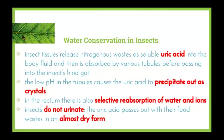Water conservation in insects works a little differently. Insect tissues release nitrogenous wastes as soluble uric acid into the body fluid, which is then absorbed by various tubules before passing into the insect's hindgut. The low pH in the tubules causes the uric acid to precipitate out as crystals, involving much less water than our nitrogenous waste system. In the rectum, there is also selective reabsorption of water and ions. Importantly, insects do not urinate — the uric acid passes out with food wastes through the rectum in almost a dry form.